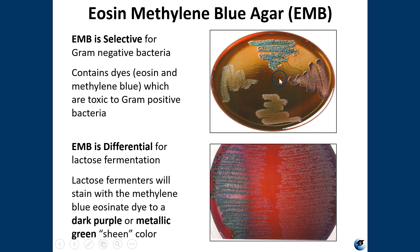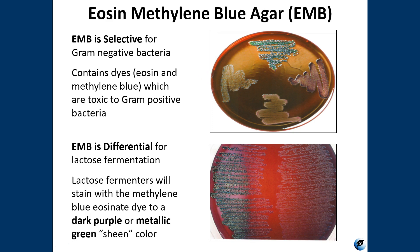This figure shows EMB inoculated with two coliforms — coliform one, coliform two — and then a gram-negative non-coliform and a gram-positive organism. Note the green and purple colors, which means these two are fermenting lactose. They're all growing pretty well, but if you look closely, the gram-positive species does look like it's struggling a little bit. This would be a case where you'd have to compare that species' growth on this media to how it grows on a general growth media to determine if it's gram-positive or gram-negative.